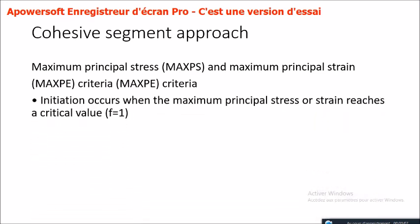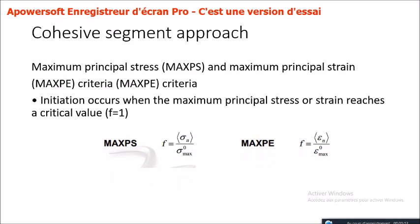For the maximum principal stress (MAXPS) and maximum principal strain (MAXPE) criteria, initiation occurs when the maximum principal stress or strain reaches a critical value, F equals 1. The crack plane is solution-dependent, perpendicular to the direction of the maximum principal stress or strain. This criterion can handle a changing crack plane and crack propagation direction.